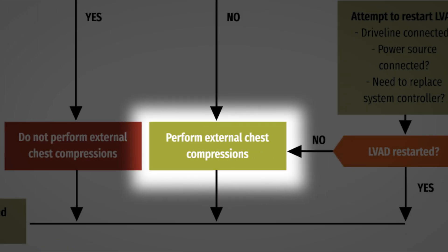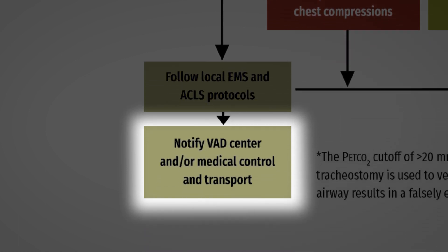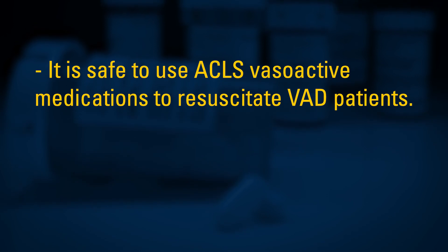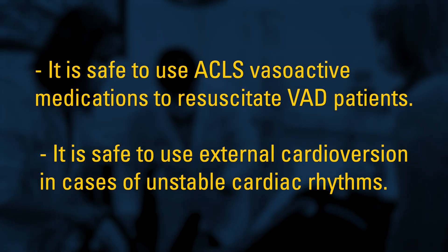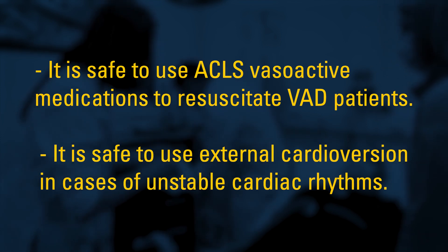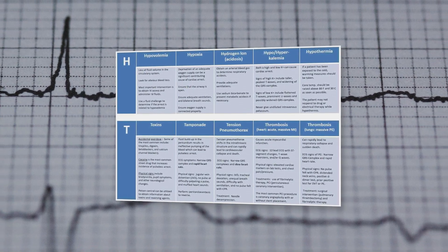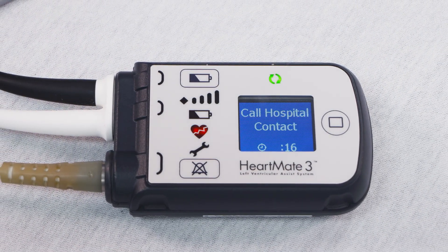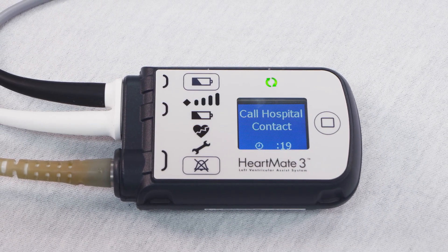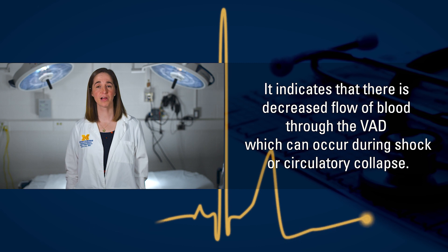If you are starting CPR on a VAD patient, follow ACLS protocols as you would for any patient and be sure to contact the local VAD team for expert consultation. It is safe to use ACLS vasoactive medications to resuscitate VAD patients, and it is safe to use external cardioversion in cases of unstable cardiac rhythms. Assess for complications commonly associated with VAD patients, including stroke, GI bleeding, and sepsis from VAD infections. Remember the H's and T's, as well as other cardiac complications including VT and VF. All VAD devices have preset low flow alarms which can distract clinicians — this alarm occurs when patients are in shock and have low blood pressure, indicating decreased flow through the VAD during shock or circulatory collapse, not necessarily a VAD malfunction.